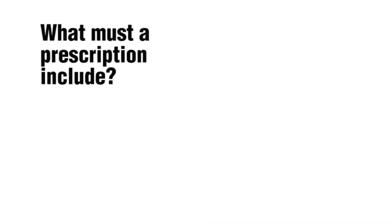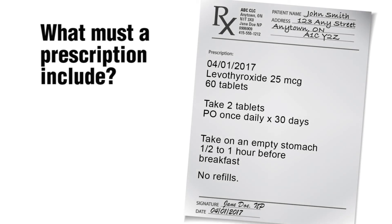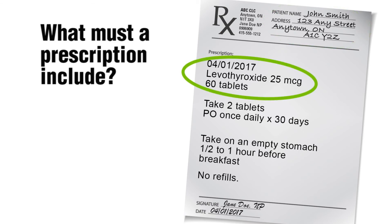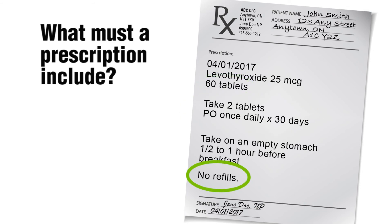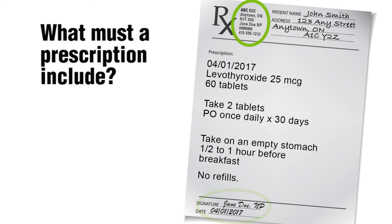A prescription is a form of communication between a prescriber and a person dispensing or administering medication. To ensure clear communication, the law requires that prescriptions include information that the pharmacist needs for dispensing and that the client needs for taking the medication safely and effectively. NPs must ensure their prescriptions include: the client's name and address; the date the prescription was written; the name of the medication; if applicable, the strength of the medication; directions for use including the dose, route of administration, and frequency; and if applicable, the duration of therapy; quantity of medication; if applicable, the number of refills; any special instructions; the NP's name, signature, protected title, registration number, business address, and phone number. NPs must include a copy of the prescription or document the particulars of the prescription in the client's health record.